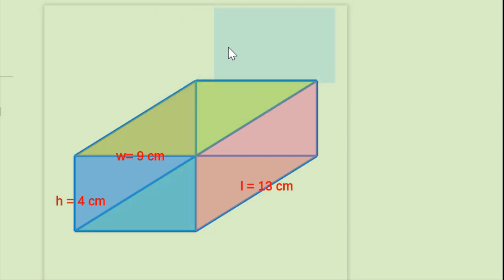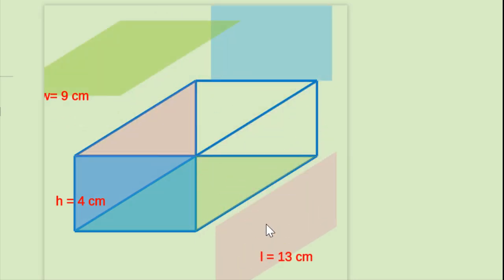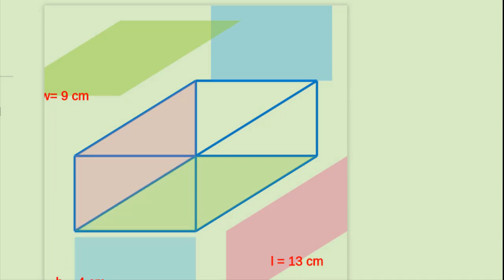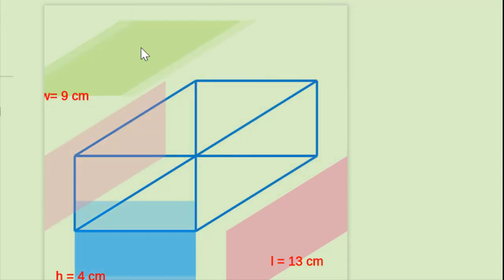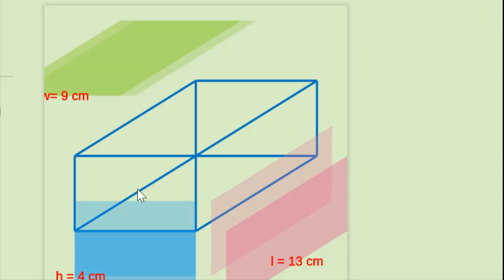Here I have 1, 2, 3, 4, 5, 6 — so I have 6 different faces. But do you notice anything about these faces? There's only 3 different shapes. There's 2 of these blue ones, 2 of these green faces, and 2 of these pink faces. So I would just need to find the area of these faces and then add it all together to have the surface area of the entire rectangular prism.